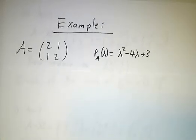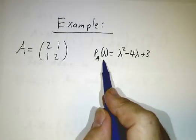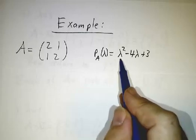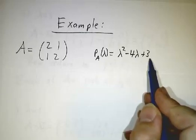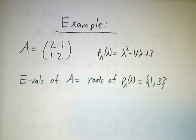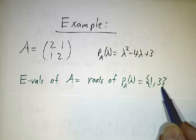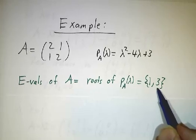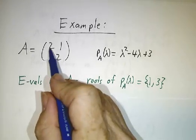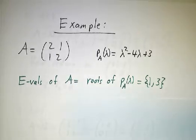Now in the last video, we computed the characteristic polynomial of this matrix and discovered it was λ squared minus 4λ plus 3. And then we found the roots of that characteristic polynomial, and they were 1 and 3. And so now, that tells us the eigenvalues of A are 1 and 3, and we need to figure out what the eigenvectors are.